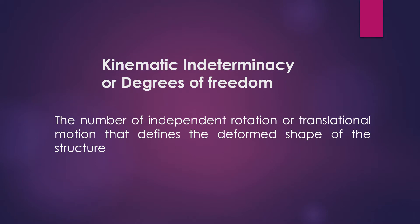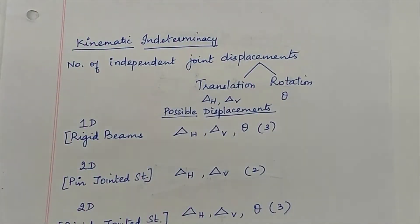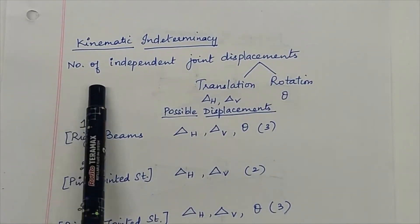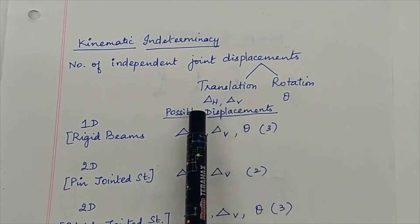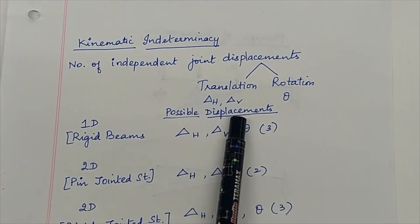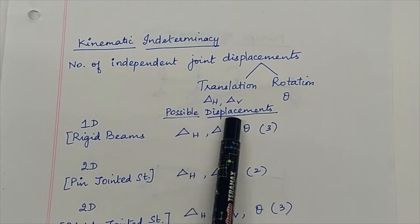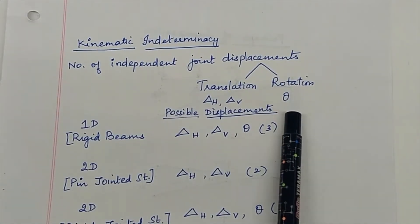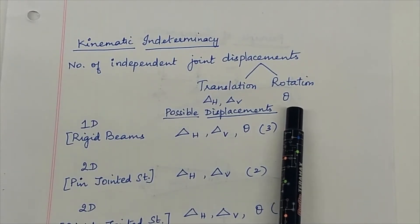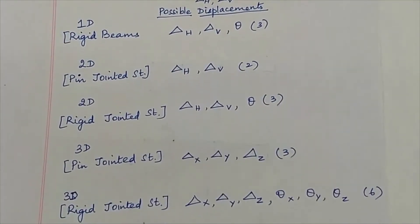Now we shall see what is kinematic indeterminacy of structures. It is defined as the number of independent joint displacements in the form of translation or rotation that define the deformed shape of the structure. Translation is either in the horizontal direction or in the vertical direction. If it is a three-dimensional structure, along three directions x, y and z. For two-dimensional structures, rotation is also a type of displacement with value theta. If it is three-dimensional, we have theta x, theta y and theta z.